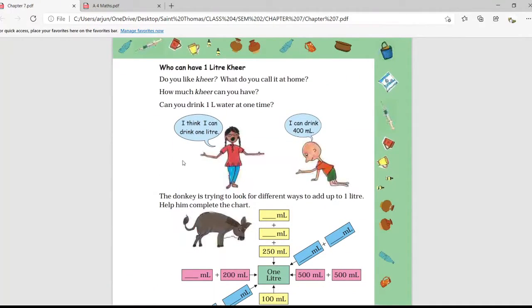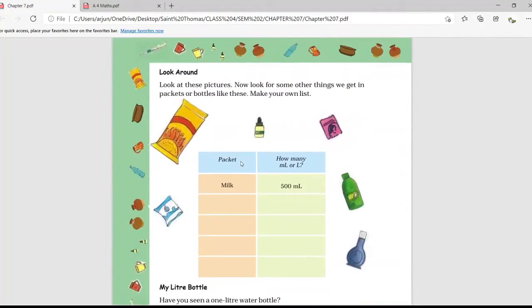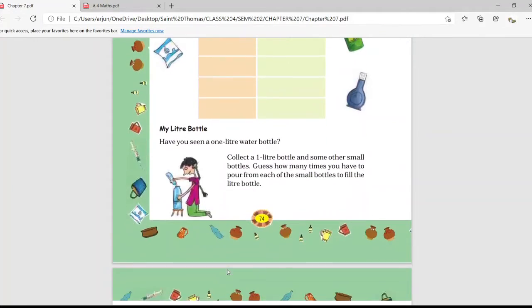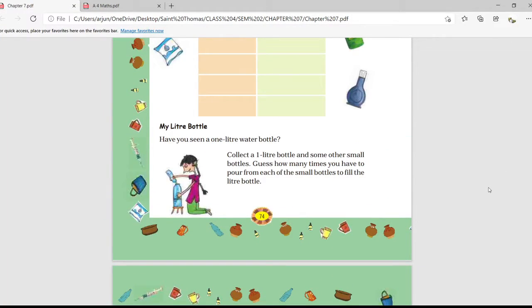Then we have seen this chart in which we can form one liter by adding different amounts of milliliters. Then we have seen that the products which we are using around us have how many quantity, that is in 500 ml or one liter or 20 ml, likewise. Then we have seen the topic 'My Liter Bottle.' What was that? Have you seen a one liter water bottle? Yes.